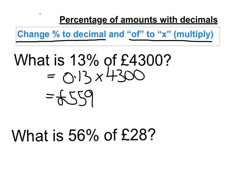What about the second one? 56% of £28. So we've got to change the percentage to a decimal, so 0.56. Of to multiply, and we're multiplying by 28. And that would give us, if we put it into our calculator, 15.68.